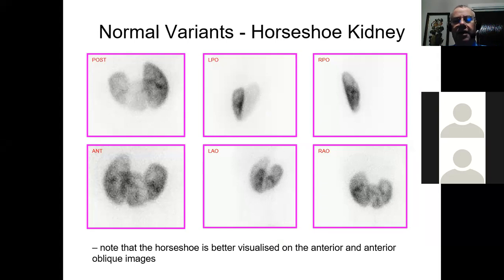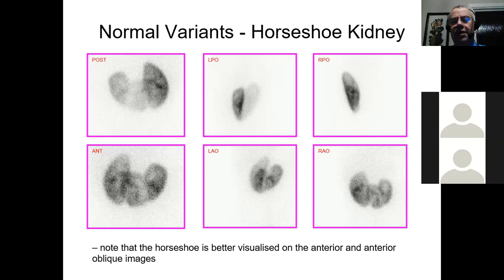We can see normal variants including horseshoe kidneys. Horseshoe kidneys may occur in as many as one percent of patients. The key thing about the horseshoe kidney is that the middle of the kidney lies in front of the aorta — it's an anterior structure — so you might get a better view of quite a lot of the kidney from the anterior view, which you wouldn't for normal native kidneys.